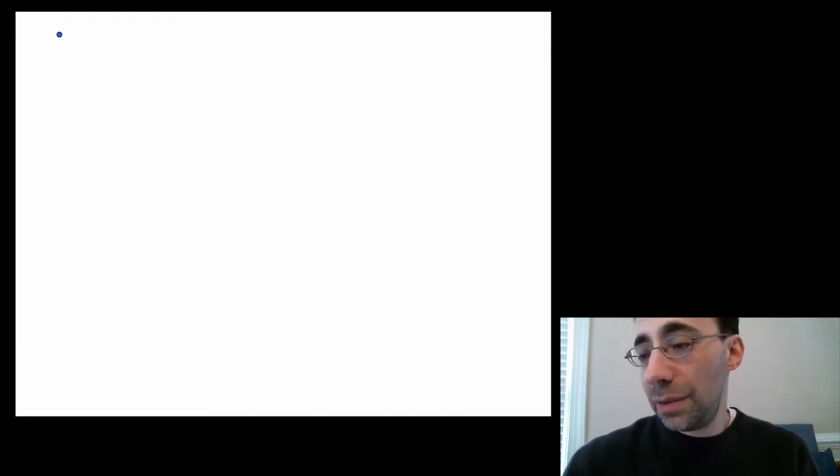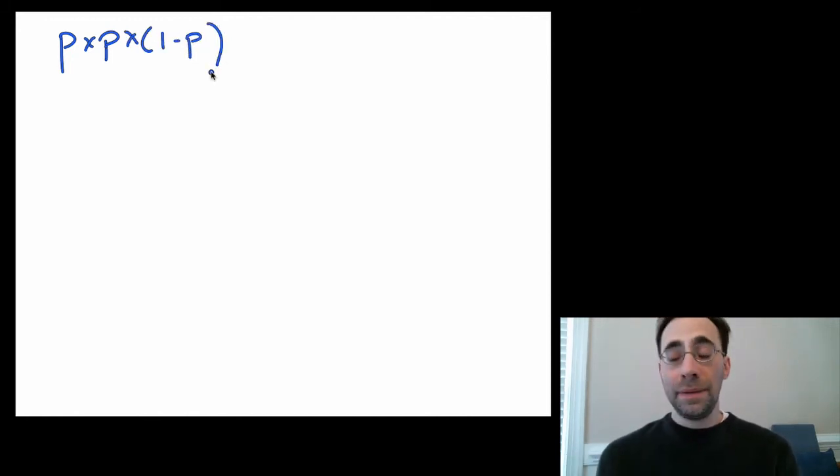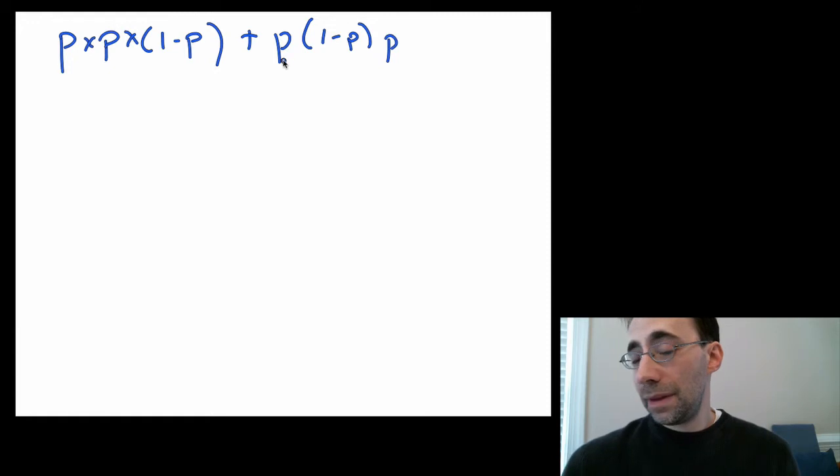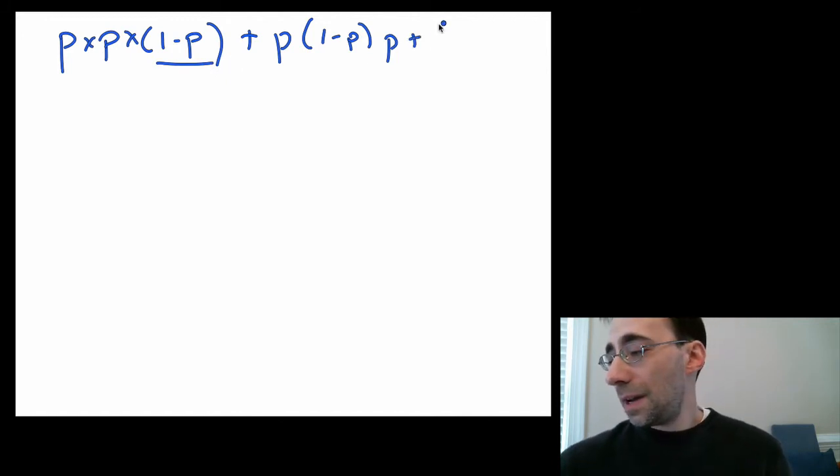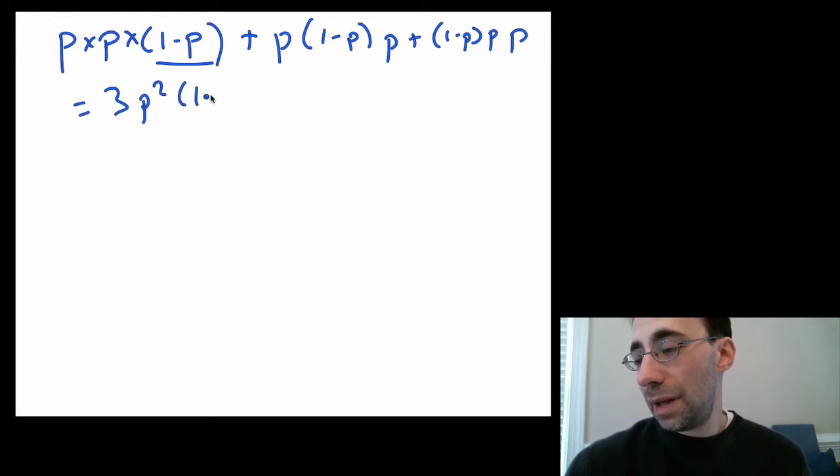Now, what's for each of those? Well, the probability of getting a one in the first one is p, times the probability of getting a one in the second one is p, times the probability of getting a zero in the third one is one minus p. Then we add the probability of getting a 1 in the first and third, but a 0 in the second. And then again, getting 0 first and a 1 and a 1. These are all the same thing. And this equals 3 times p squared times 1 minus p.